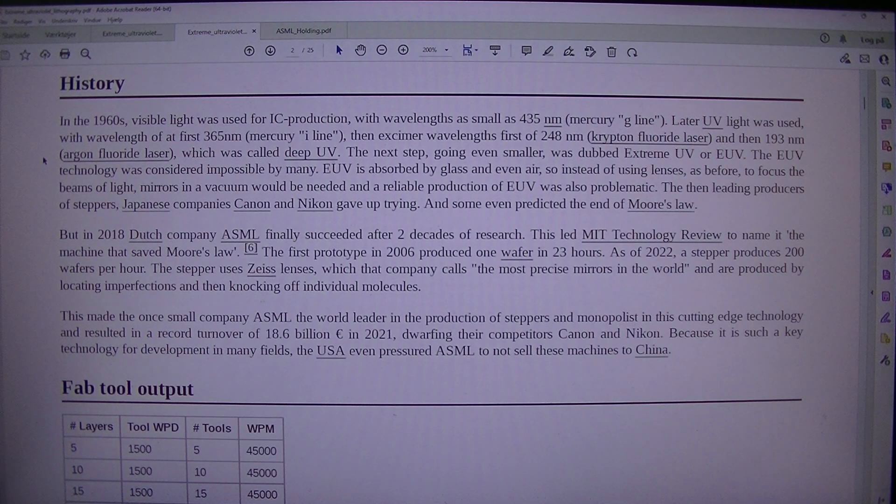The next step going even smaller was dubbed extreme UV or EUV. The EUV technology was considered impossible by many. EUV is absorbed by glass and even air, so instead of using lenses as before to focus the beams of light, mirrors in a vacuum would be needed. And the reliable production of EUV was also problematic. The then leading producers of steppers, Japanese companies Canon and Nikon, gave up trying, and some even predicted the end of Moore's law. But in 2018, Dutch company ASML finally succeeded after two decades of research. This led MIT Technology Review to name it the machine that saved Moore's law.